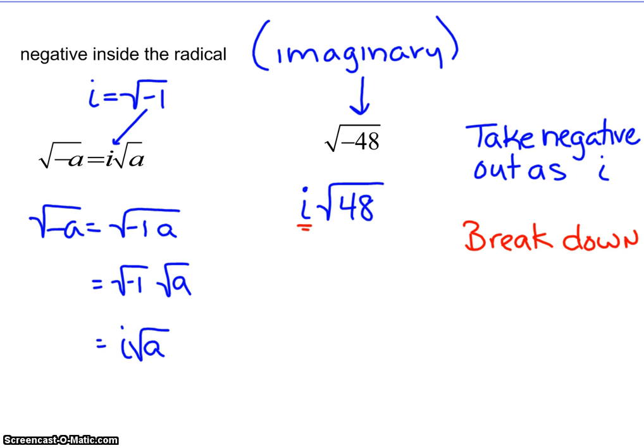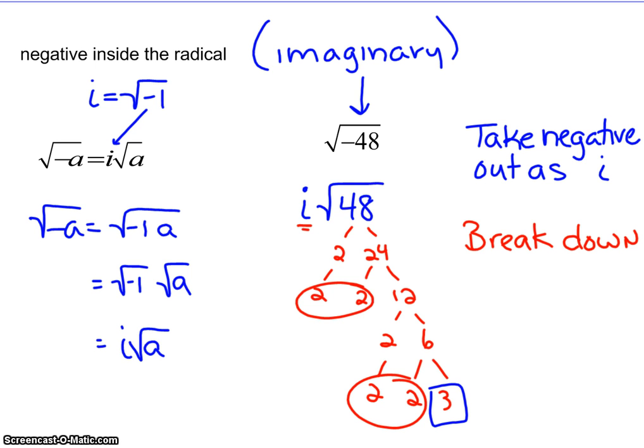Now break down like we did before, but don't forget your i. When I go and do my 48, it's even, so I can go with the two. I like to continue bringing them with until they get circled because if I don't, I lose them. Even at the end, I'll box up my singles. On the outside I have the i—don't want to forget about that—you have a two, you have another two. On the inside you have a three. When I multiply all my inside stuff together and outside stuff together, I'm left with 4i√3.